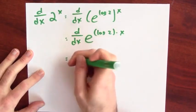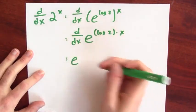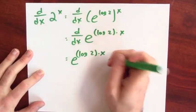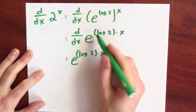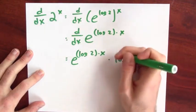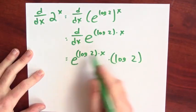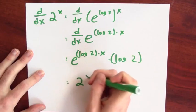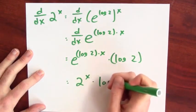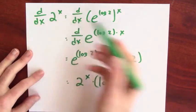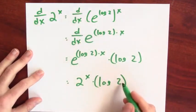Now I could make this look a little bit nicer. e to the log 2 times x, well that's just 2 to the x times log 2. So the derivative of 2 to the x is 2 to the x times log 2. And of course, 2 didn't play any significant role here. I could have replaced 2 by any other number and I'd get the same kind of formula.